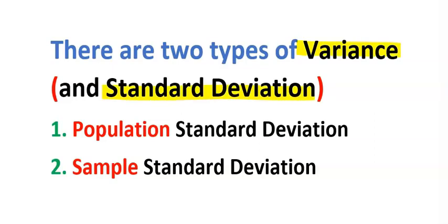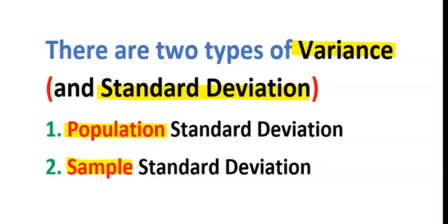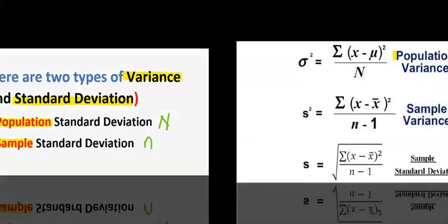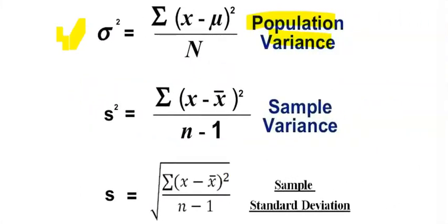We have population variance, which gives us population standard deviation, and sample variance, which when taking the square root gives us sample standard deviation. For population we use capital N to denote the size, while for sample we use small n. The population variance formula is sigma squared using capital N, while sample variance uses s squared with small n minus one.